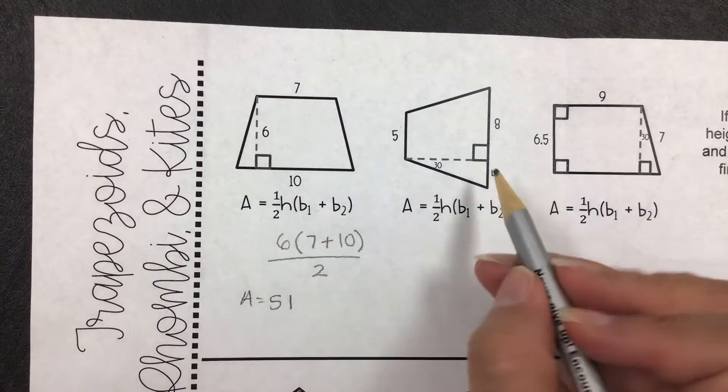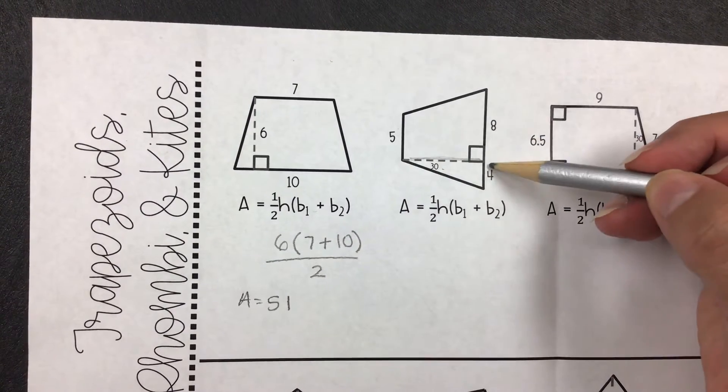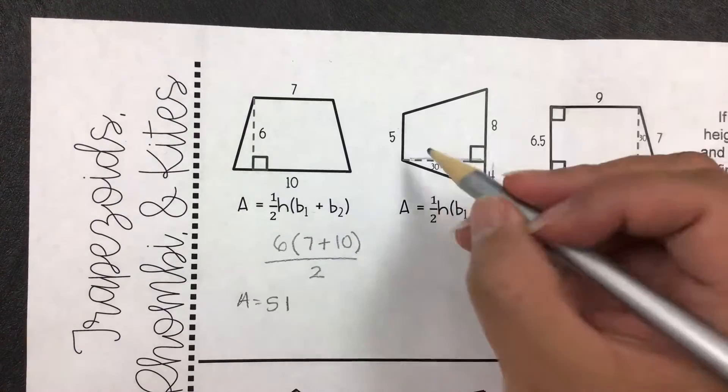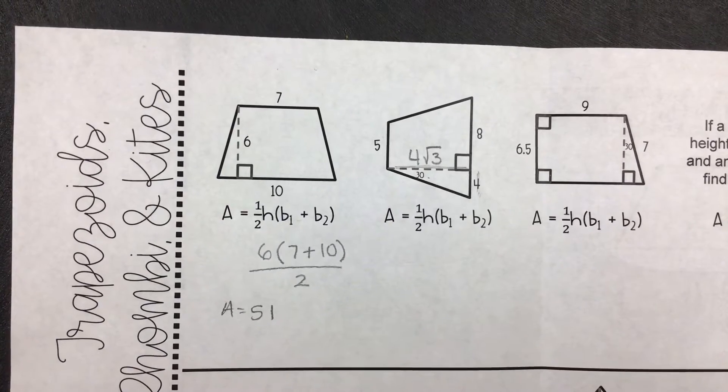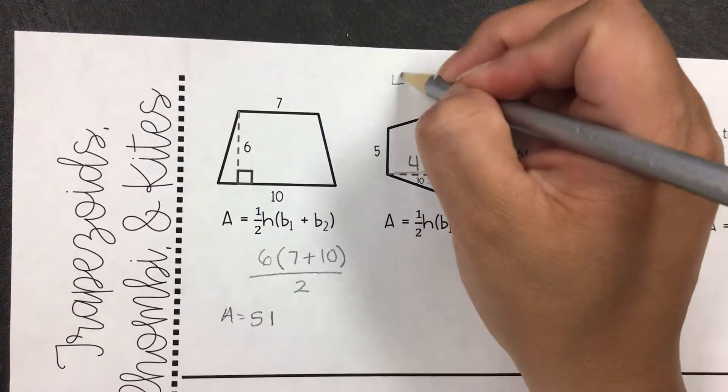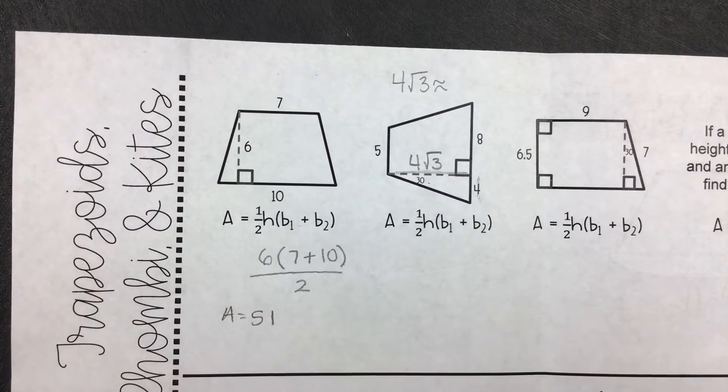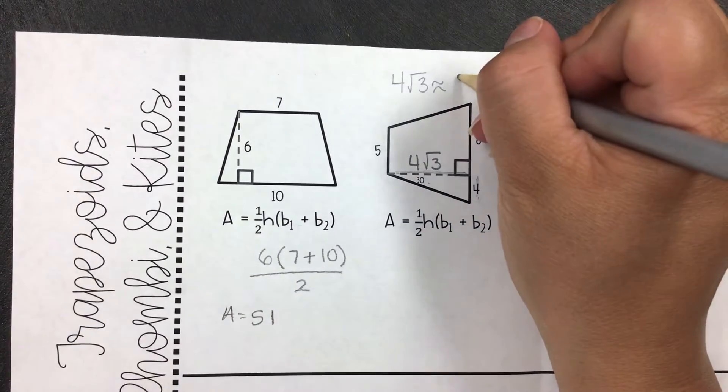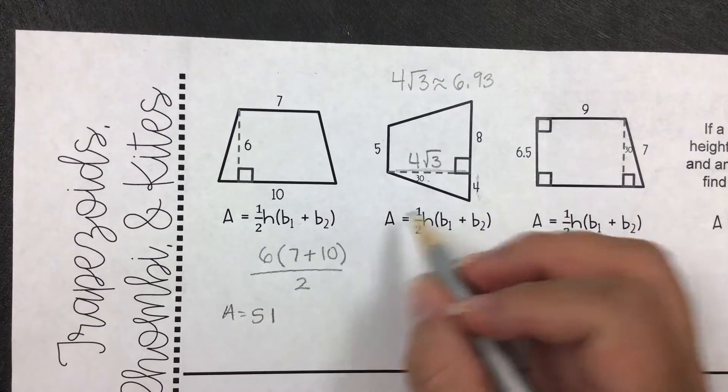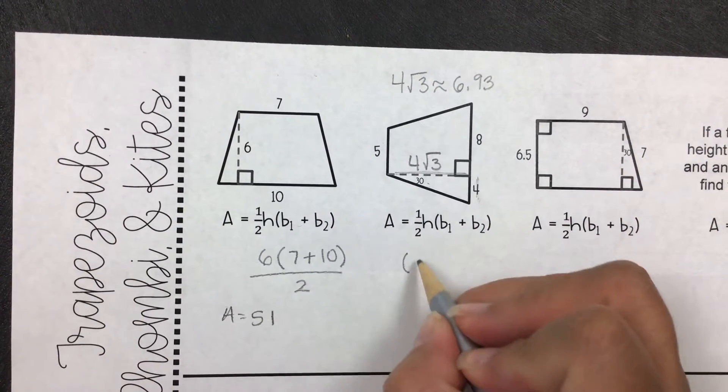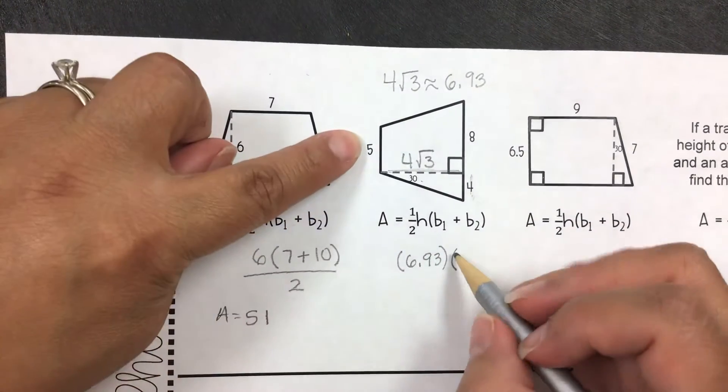For the next one, what we're looking for is this length right here. This is a 30, 60, 90 triangle, and this is a short leg. So we take the short leg and multiply by the square root of 3 to get the height. We're going to use the decimal approximation for square root of 3, which is approximately 6.93. And so for this one, we have the height is at 6.93 multiplied by the bases, which this is 5 and then this whole thing is 12.